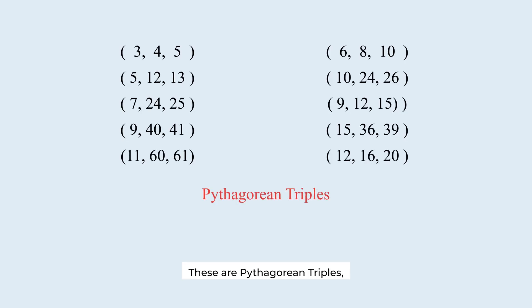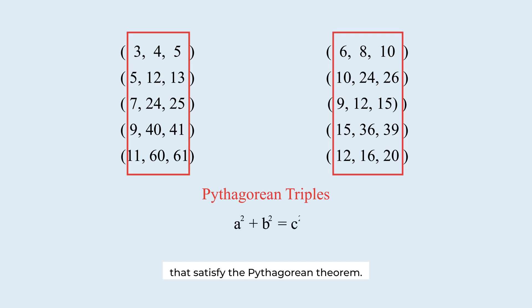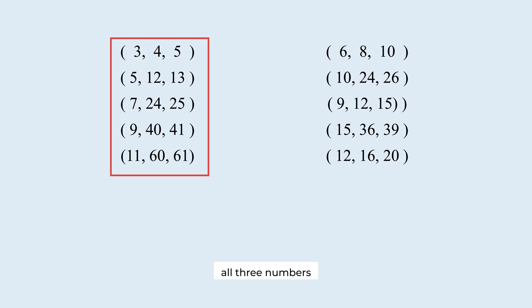These are Pythagorean triples, sets of three natural numbers that satisfy the Pythagorean theorem. Among them, these triples in which all three numbers are pairwise coprime are called primitive Pythagorean triples.